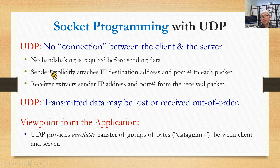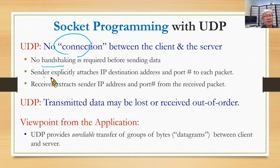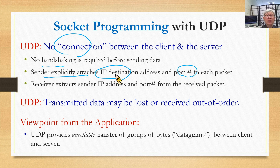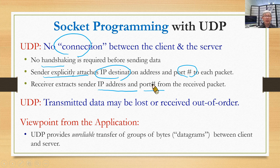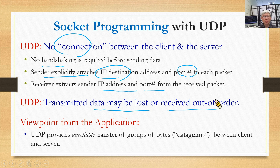Socket programming with UDP. First of all, UDP provides service without connection — no connection between the client and the server. Therefore, no handshaking. The sender attaches the destination IP address and port number to each datagram. The receiver can extract the sender's IP address and port number from the received packet. Because of no connection and no further treatment, transmitted data may be lost or received out of order. From the viewpoint of an application, we can still provide some possible service using UDP.